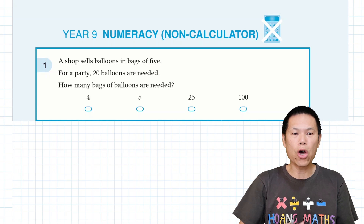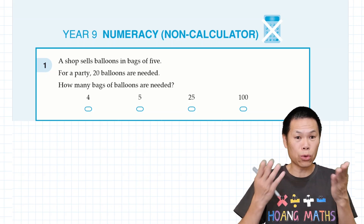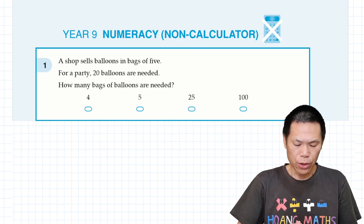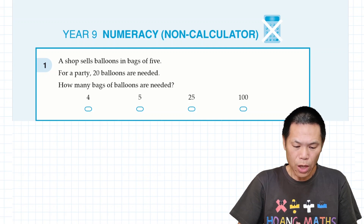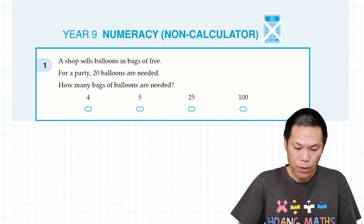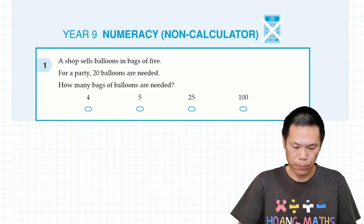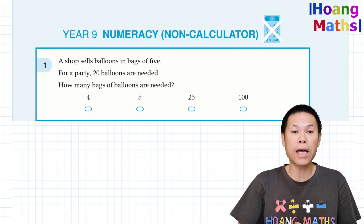This is a non-calculator part, so we have to do without a calculator. So first one: a shop sells balloons in a bag of five. For a party, 20 balloons were needed. How many bags of balloons are needed?